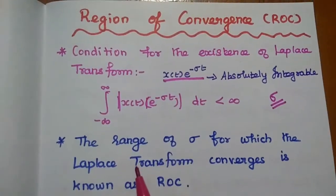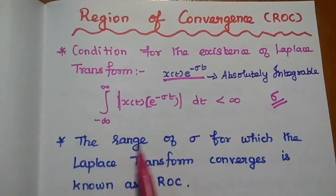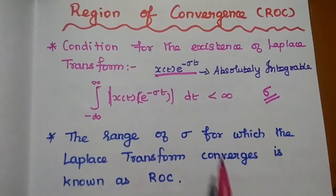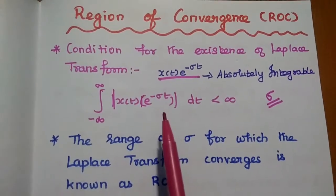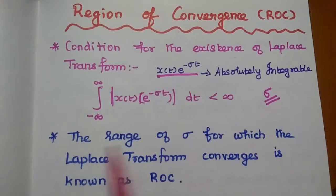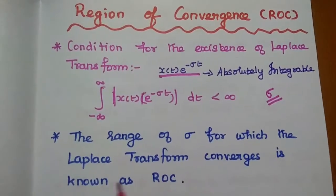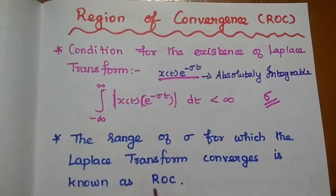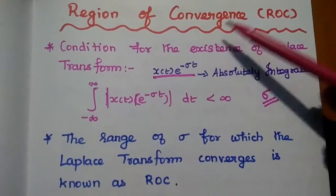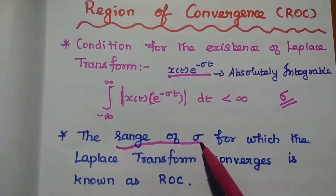We can define the region of convergence of the Laplace transform as the range of sigma for which the Laplace transform converges. This condition should be satisfied based on the value of sigma. The range of sigma for which the Laplace transform converges is known as ROC, that is, region of convergence. The region of convergence is purely based on the range of sigma.